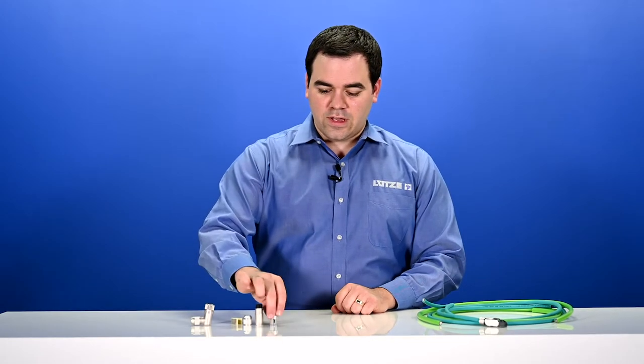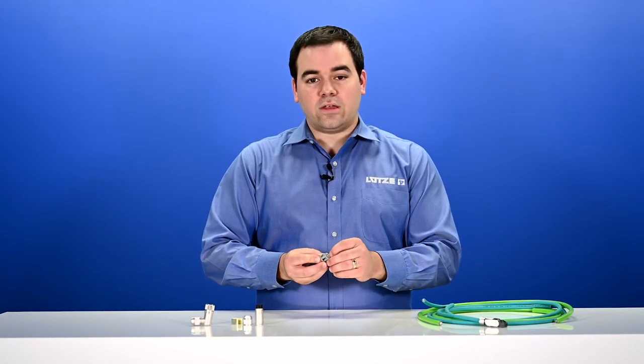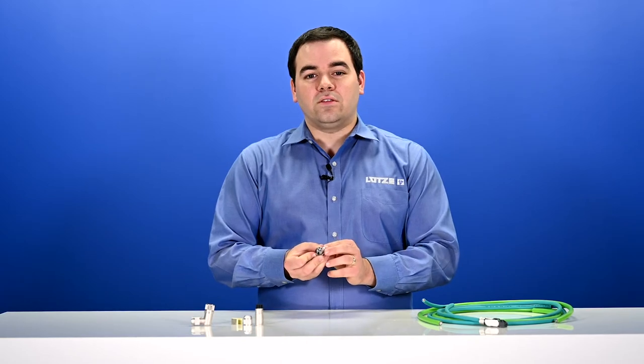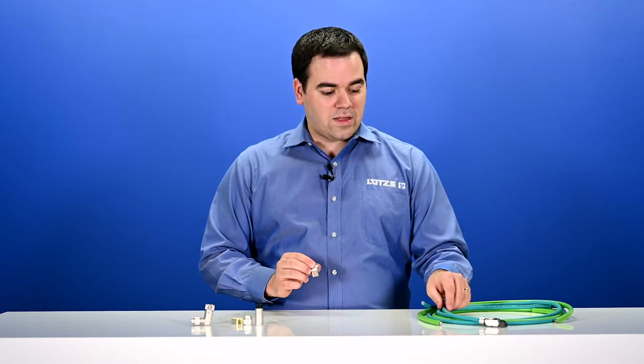Welcome back to Lutza's video series. I'm Matthew Tarny, Product Market Manager for Cable and Connectivity Products. Today we're going to be talking about a brand new product from Lutza. It's an M12 connector with integrated cage clamps, very easy to install and very easy to use. Today we're going to look at this connector and how it connects to one of our more popular Ethernet cables.